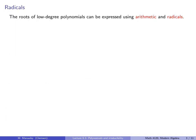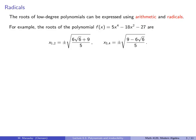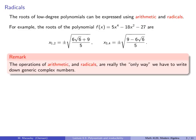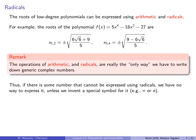As you know, the roots of low-degree polynomials can be expressed using arithmetic and radicals. For example, the roots of the polynomial f(x) = 5x⁴ − 18x² − 27 are plus or minus the square root of (6√6 + 9)/5, and plus or minus the square root of (9 − 6√6)/5. Notice that the operations of arithmetic and radicals are really the only way we have to write down generic complex numbers. Thus, if there is some number that cannot be expressed using radicals, then we have no way to express it unless we invent a special symbol for it, like π or e.